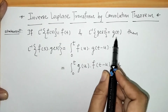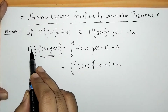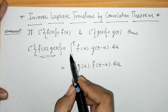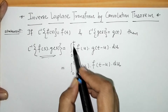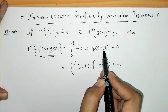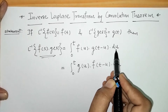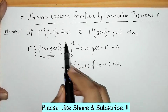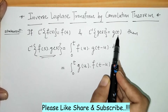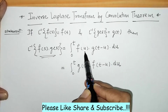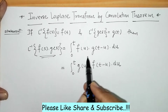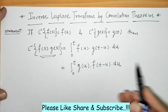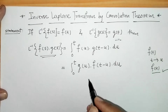So when we have two functions whose inverse Laplace transforms are known, the inverse Laplace transform of their product F(s)·G(s) is given by the integral of f(u)·g(t - u) with respect to u, from 0 to t. The meaning of both integral forms is the same — we have just reversed the functions. Now let's understand this theorem with a simple example.